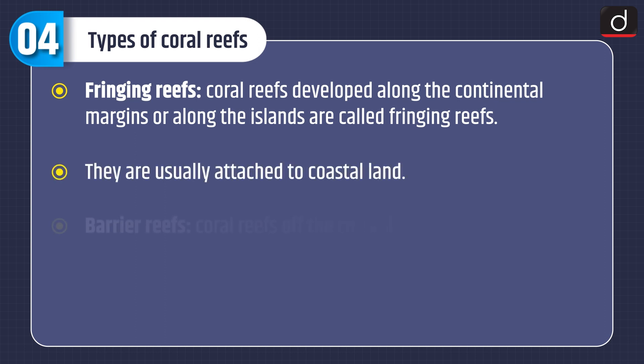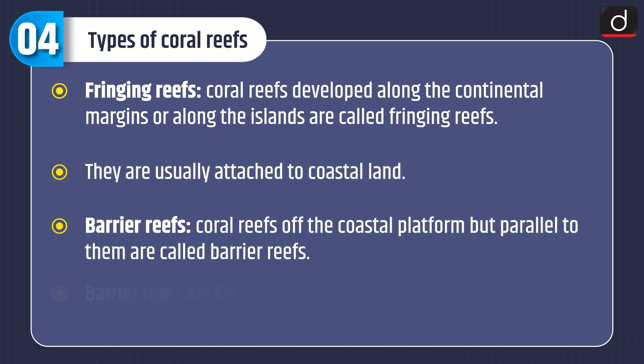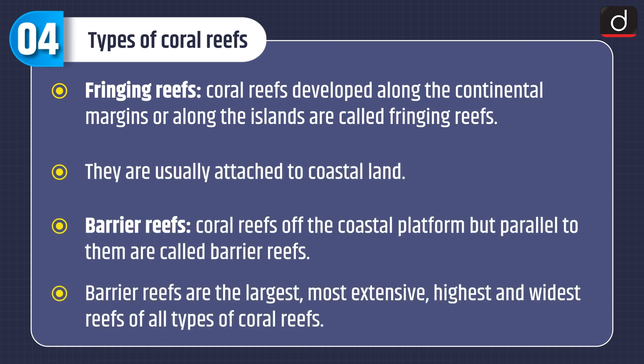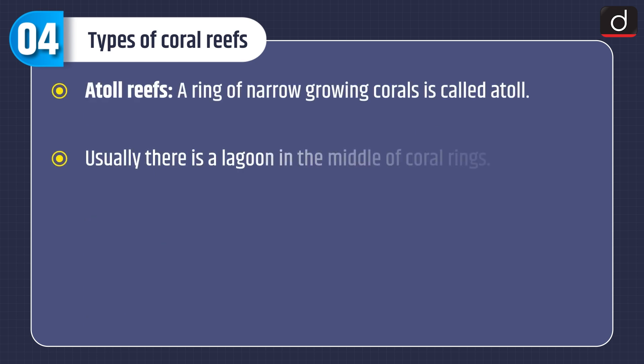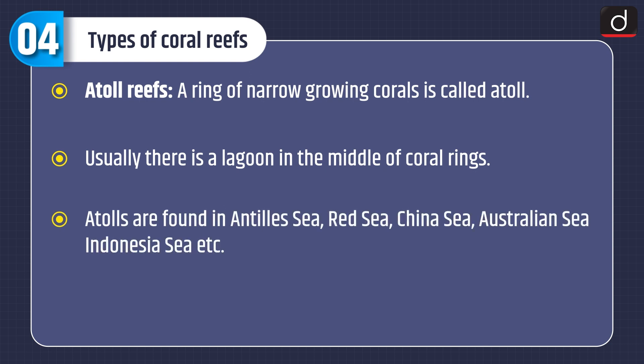Now let's see the types of coral reefs. First is fringing reefs. Coral reefs developed along the continental margins or along the islands are called fringing reefs. They are usually attached to coastal land. The other type is barrier reefs. Coral reefs of the coastal platform but parallel to them are called barrier reefs. Barrier reefs are the largest, most extensive, highest and widest reefs of all types of coral reefs.